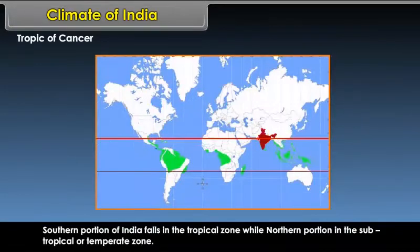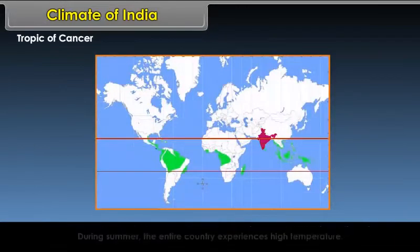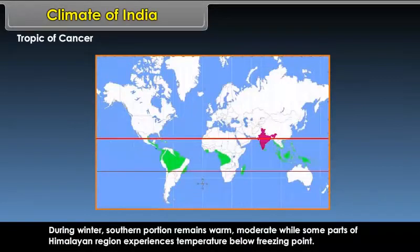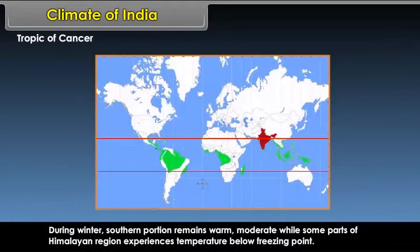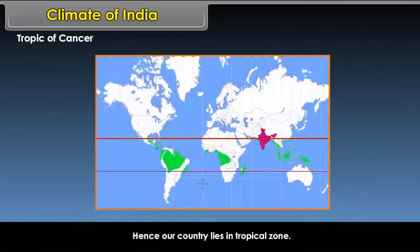The southern portion of India falls in the tropical zone while the northern portion falls in the subtropical or temperate zone. During summer, the entire country experiences high temperature. During winter, the southern portion remains warm and moderate, while some parts of the Himalayan region experience temperatures below freezing point. Hence, our country lies in the tropical zone.